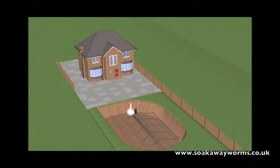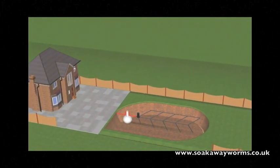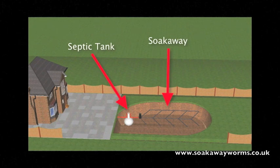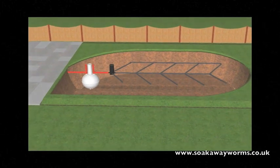A septic tank is used in instances where the property is unable to connect to the main drainage or sewage system for whatever reason. Septic tanks come in a variety of shapes and sizes. They go underground and are generally made from plastic or fiberglass.